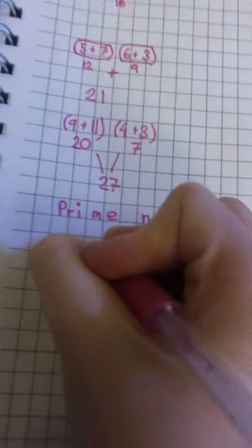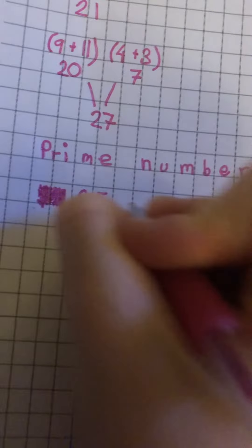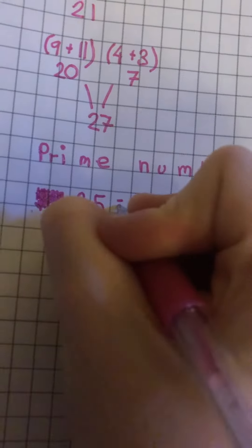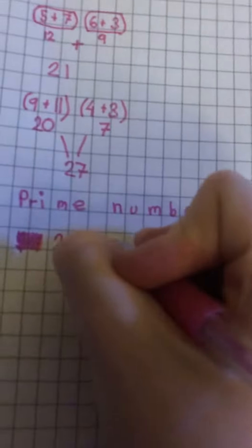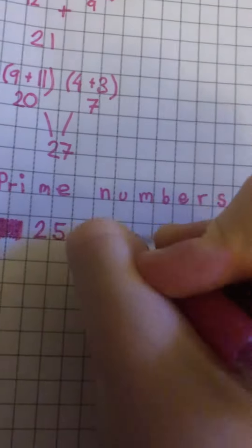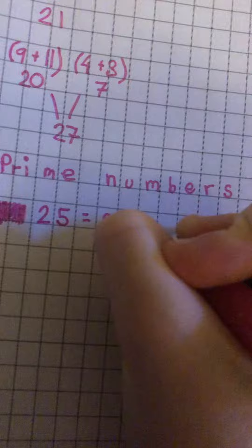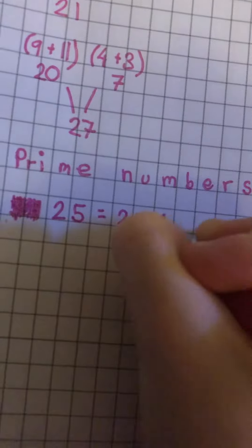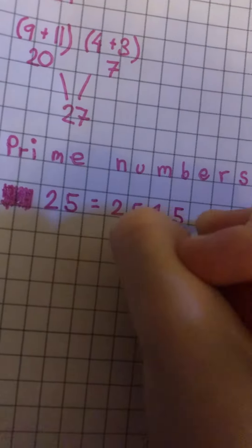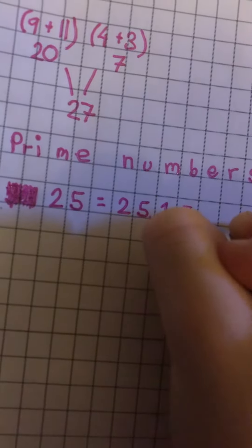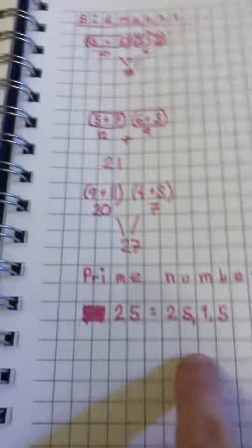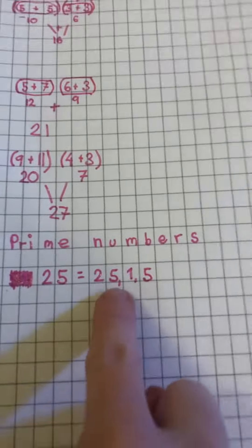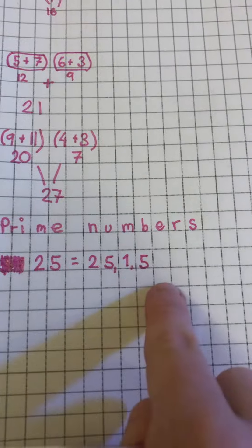25 is a prime number because its factors are 25, one, and five. That is three factors there: 25, one, and five.